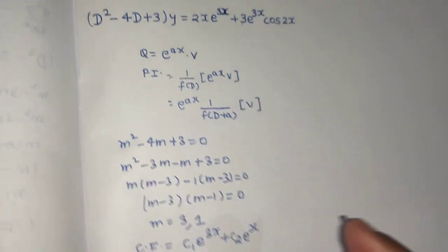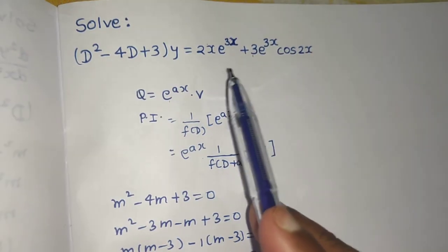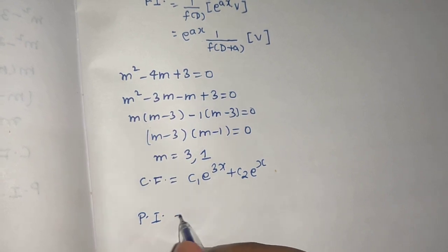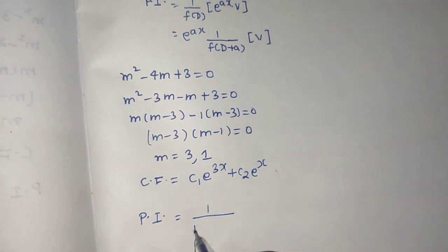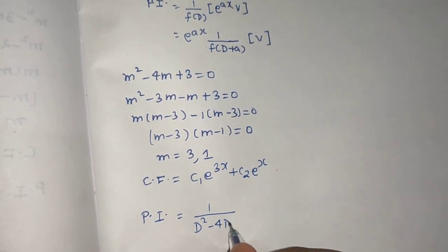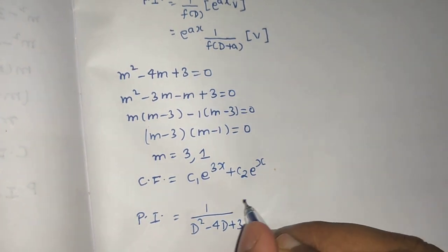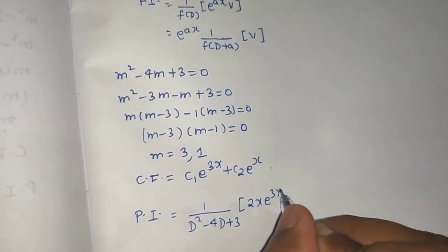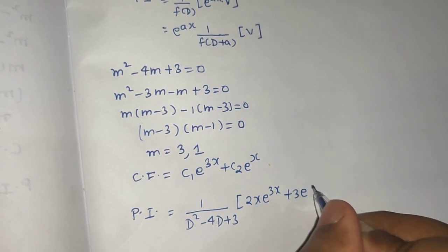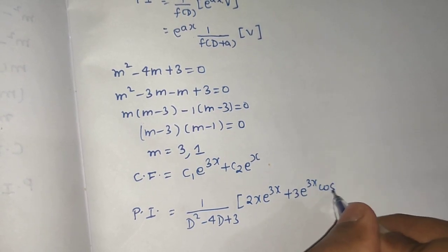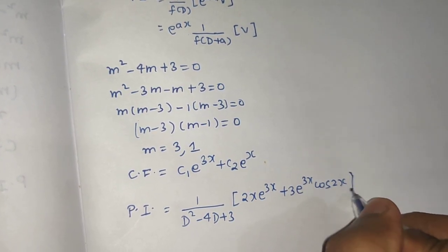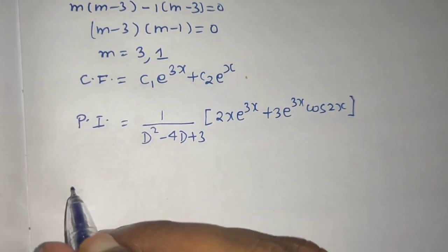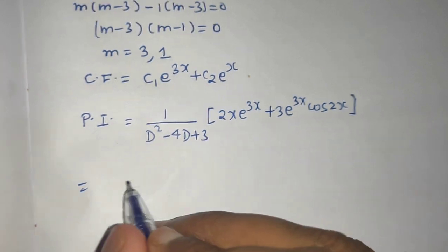So the complementary function is: CF = c₁e^(3x) + c₂e^(x). Now for the particular integral, which will be 1/f(D) operating on the RHS: 2x·e^(3x) + 3e^(3x)·cos(2x).